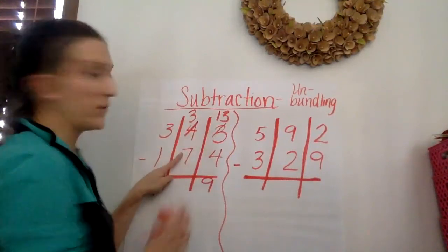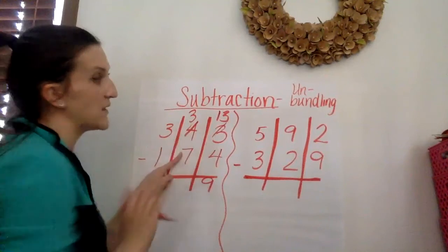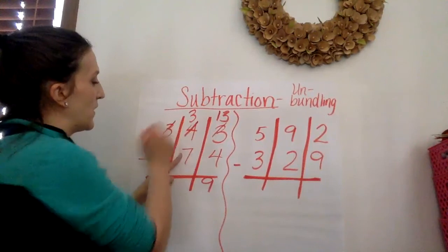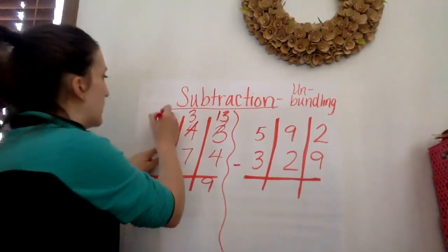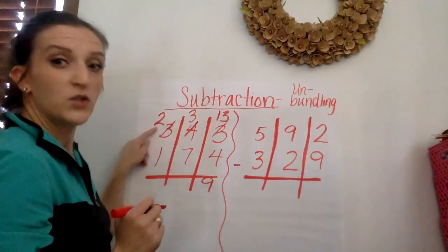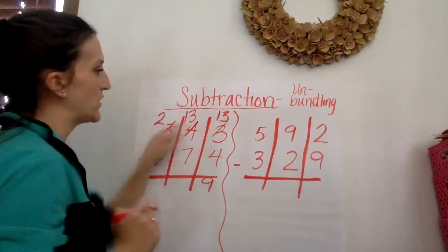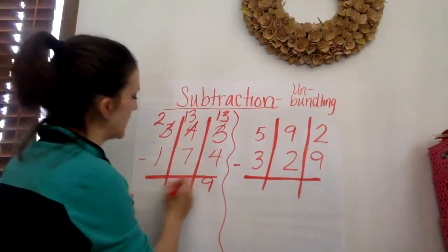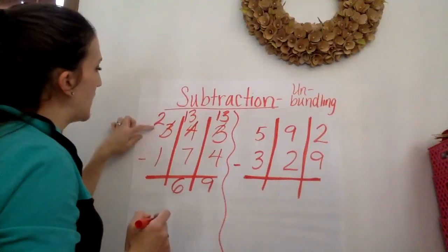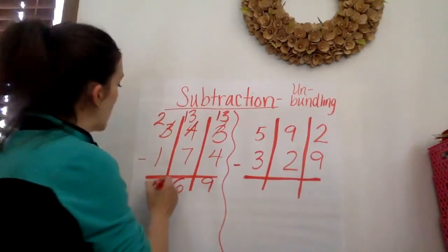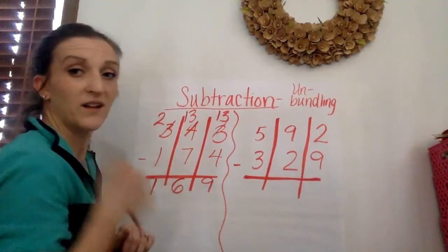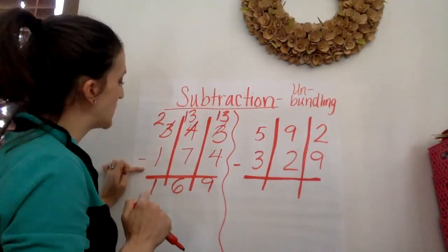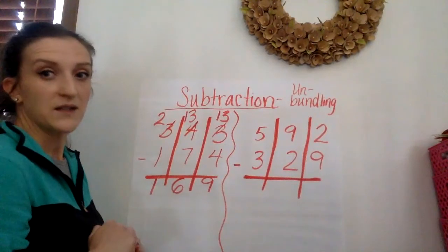Now I'm going to go into the tens place. I have 3 minus 7. It doesn't work. So I have to go to the hundreds place and knock on the door. Hundreds can I have one please. Sure thing. So now I have two hundreds and I have 13 tens. So 13 minus 7 equals 6. Now in the hundreds place I have 2 minus 1. 2 minus 1 is 1. Good job guys. Your difference of 343 minus 174 is 169.